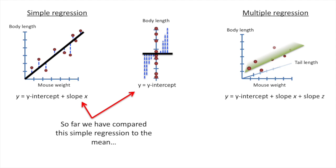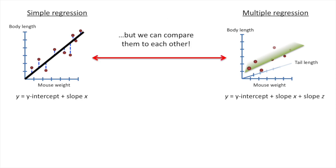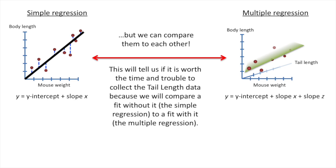So far, we have compared this simple regression to the mean, and this multiple regression to the mean. But we can compare them to each other, and this is where multiple regression really starts to shine. This will tell us if it's worth the time and trouble to collect the tail length data, because we will compare a fit without it, the simple regression, to a fit with it, the multiple regression.